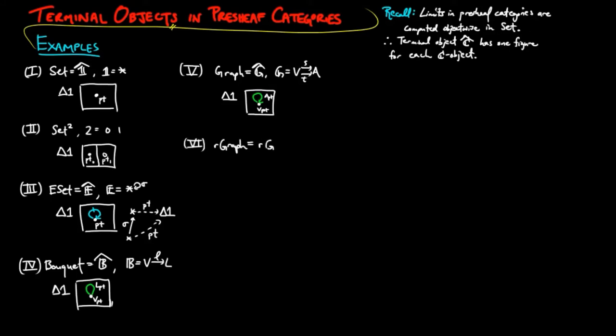In the category of reflexive graphs, it is the container with one vertex and one arc, which is necessarily a distinguished loop.